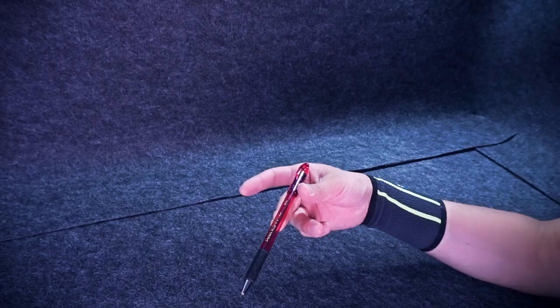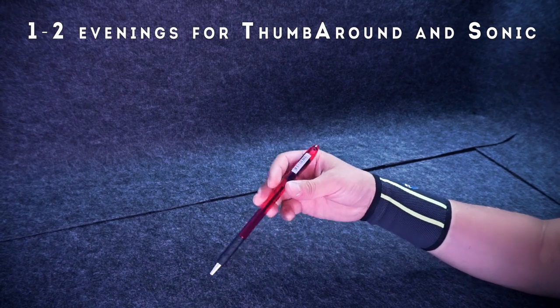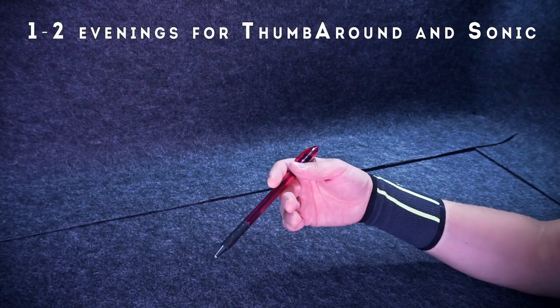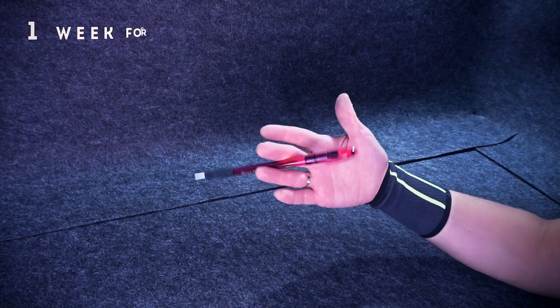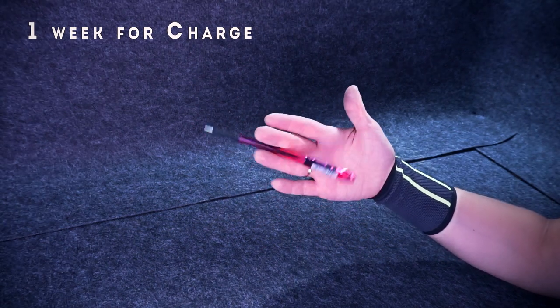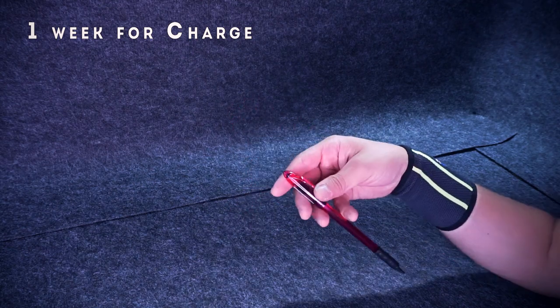Again, you can find a more detailed tutorial for this trick on my channel. I will leave all the needed links in the description under this video on YouTube. Learning thumb around and Sonic would take you one, maximum two evenings for each trick. Charge would need about a week, maybe a little more or less, and finger pass mini combo, eternity. But as you don't really need to make this mini combo fast and smooth, to make awesome beginner mini combos you just need to know how to do passes one by one. It would take you less than 30 minutes.